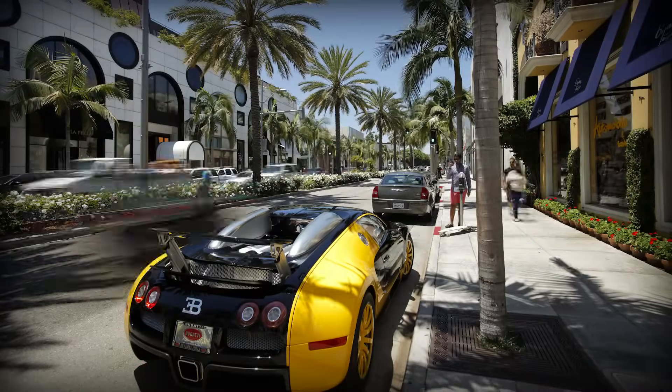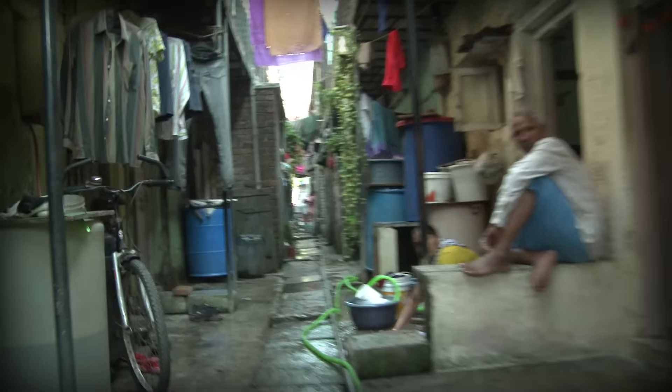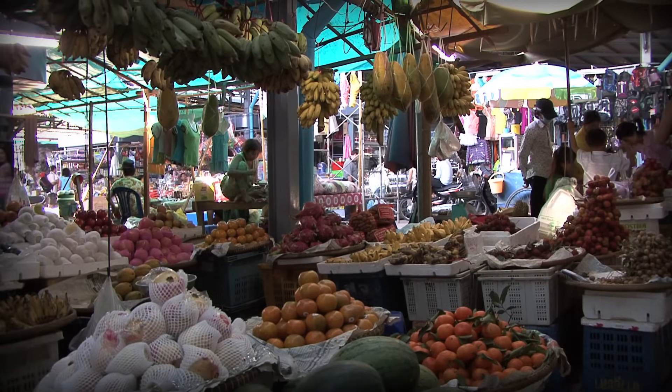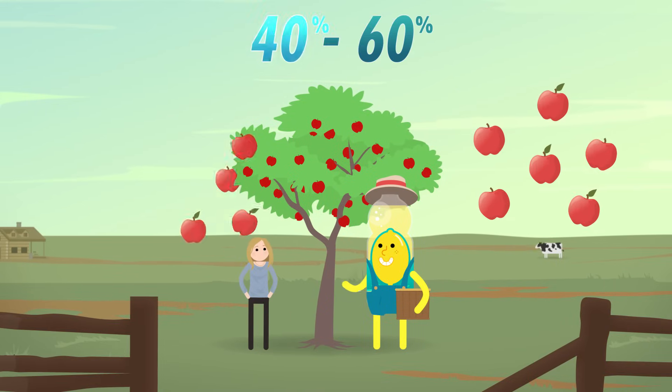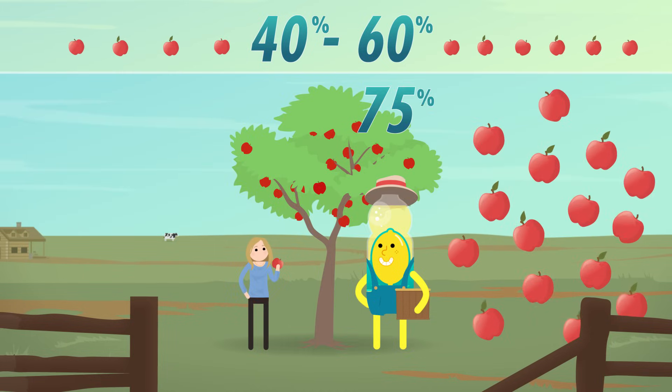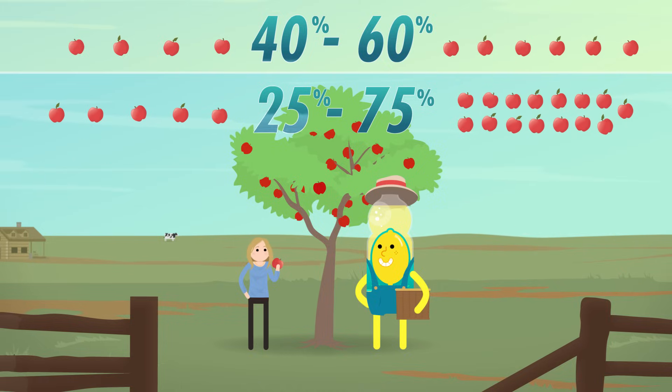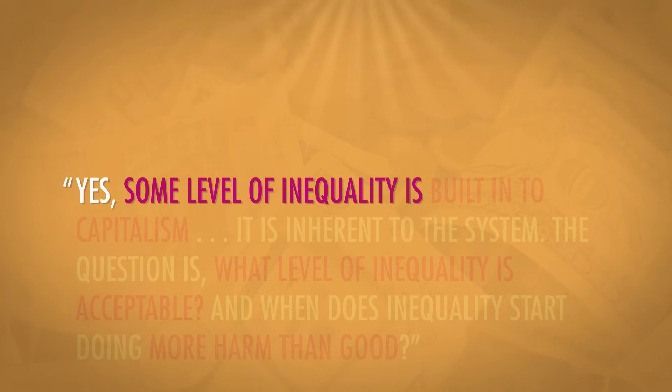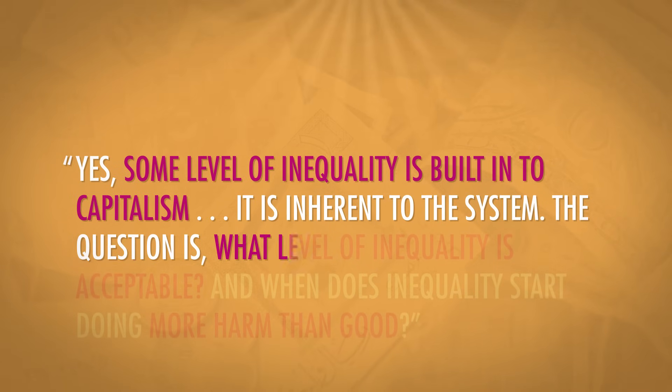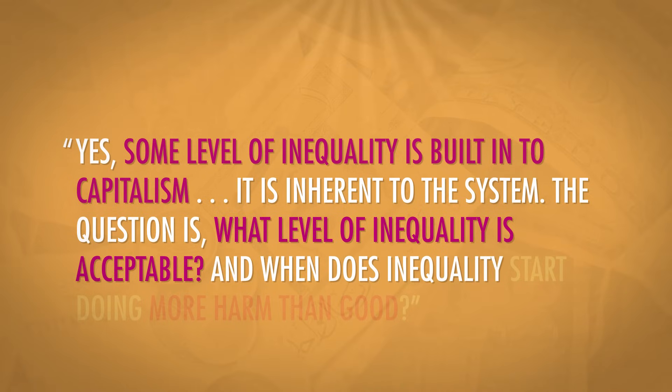The debate over income inequality isn't about whether it exists — it obviously does. The fight is over whether it's a problem and what should be done about it. Those who don't think it's a big deal argue that while the data suggests the rich are getting richer and the poor are getting poorer, it could be that all groups are making more money but the richest share is just growing faster. Like, if you own an apple tree and we pick 10 apples — you keep 6 and give me 4 — then a week later we pick 20 apples and you take 15 and give me 5, my share went from 40% to 25%, but each of us still got more apples. It's true that people in the lowest income bracket earned a little more money over the last 40 years, but in the last 20 years that average income has been falling, while the rich have continually gotten richer. Bill Gates said: yes, some level of inequality is built into capitalism — it's inherent to the system. The question is, what level of inequality is acceptable, and when does inequality start doing more harm than good?